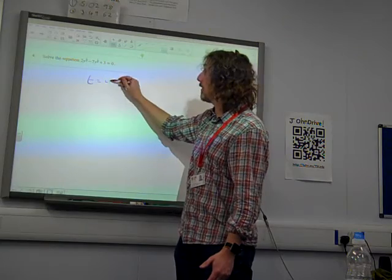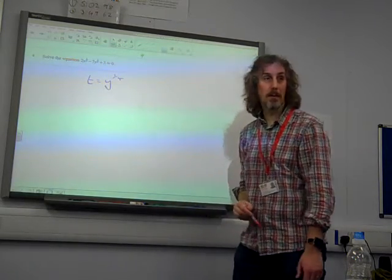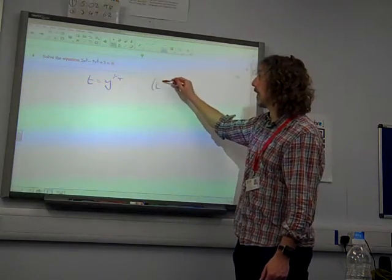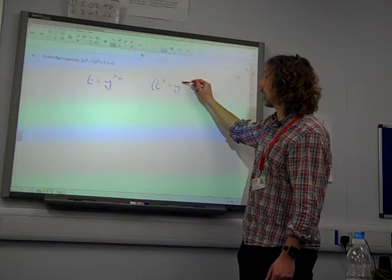2y to the half minus 7y to the quarter plus 3 is 0. You spot that one term has double the power of the other term, so I'm going to do a substitution. I'm going to let t equal y to the quarter. Of course, that means that t squared is y to the half.